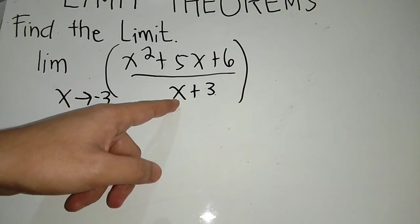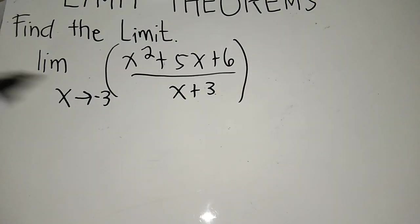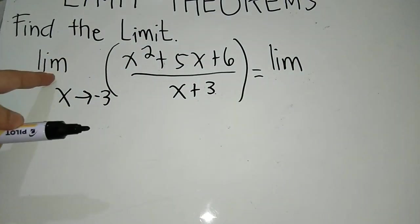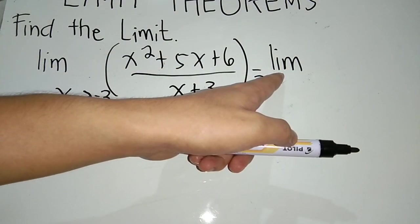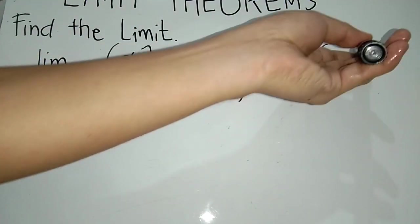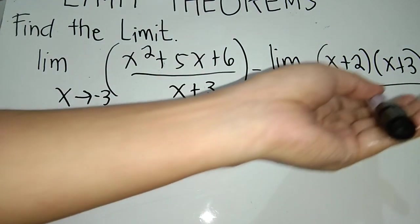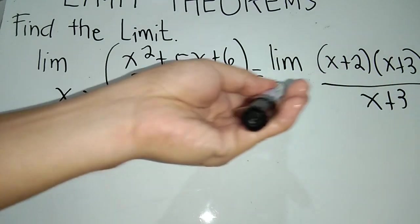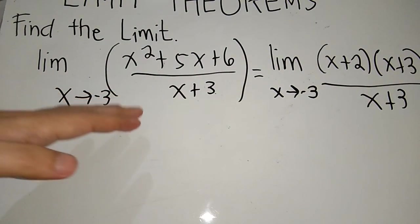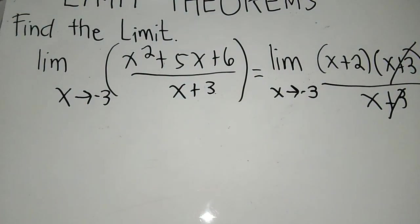Our denominator is already in its base form and is not factorable anymore. So we are going to factor the numerator — always copy the limit word. Factoring the numerator gives us (x plus 2)(x plus 3) over (x plus 3), as x approaches negative 3. From here we can cancel the common (x plus 3) factors.